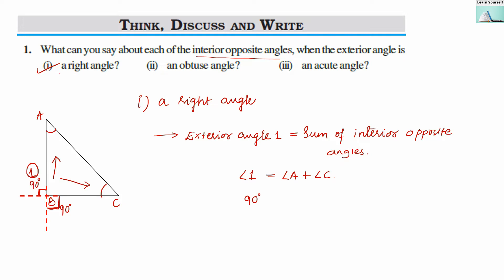Angle 1 measures 90 degrees, as given in the question. So 90 degrees is the total sum of angle A plus angle C. When angle A and angle C's sum is 90 degrees, they both must be acute angles. So our answer is: both interior opposite angles are acute angles.